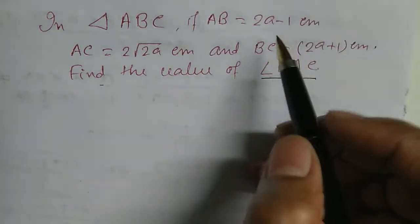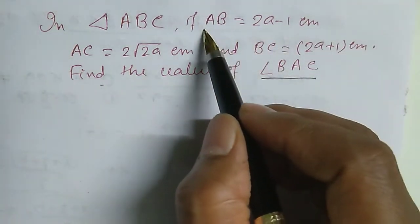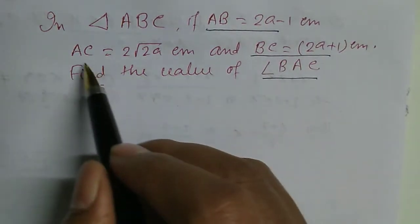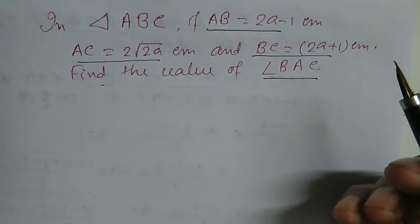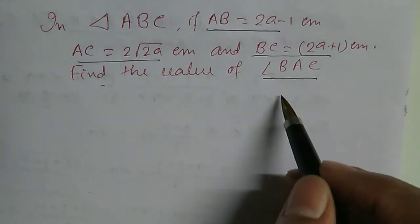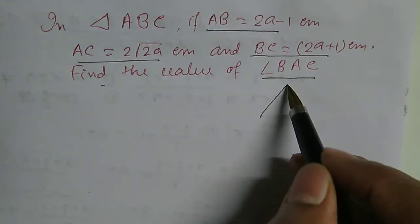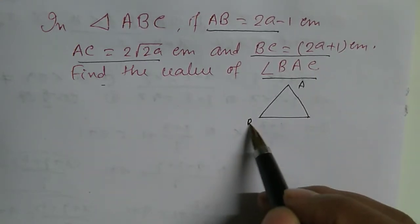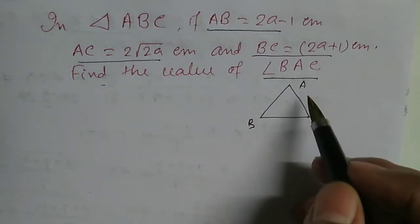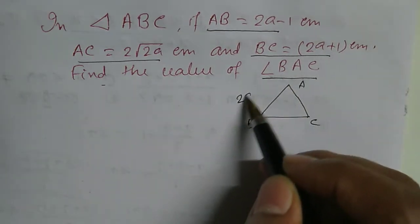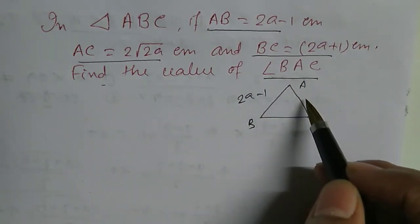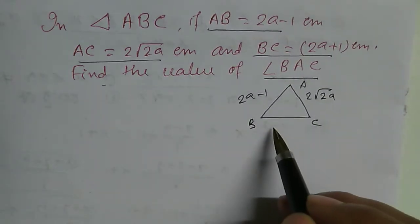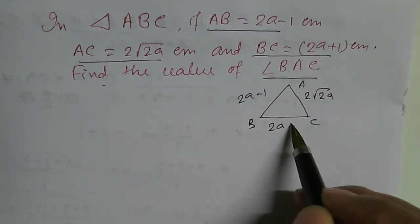Here we note that it is given only the length of the sides of a triangle. So if we draw triangle ABC, AB is 2a minus 1, AC is 2 root 2a, and BC is 2a plus 1.